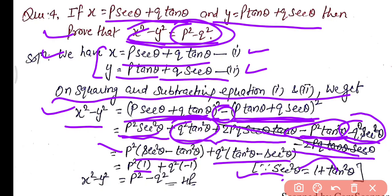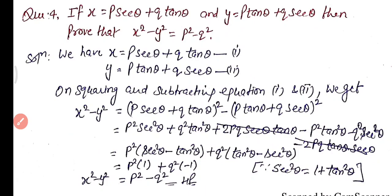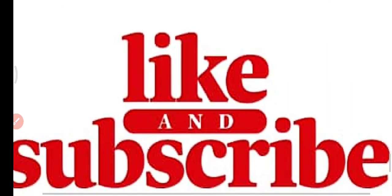Expanding and collecting terms using p²·sec² θ and p²·tan² θ, applying the identity sec² θ minus tan² θ equals 1, we get x² minus y² equals p² minus q². This completes worksheet number 36. If you learned from this video, please subscribe to my channel and share this video. Thanks for watching.